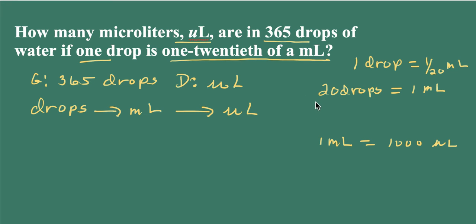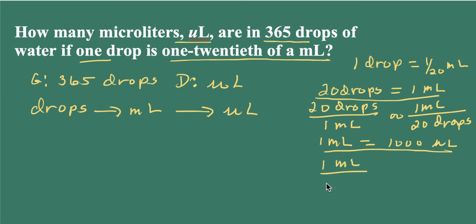Remember, with each equivalence we can write two conversion factors. So 20 drops per one milliliter, or I can write one milliliter per the 20 drops. And I'll do the same with this equivalence here. Let me underline the equivalences. So we have one milliliter per 1,000 microliters, or I can write it as 1,000 microliters per milliliter. So now I'm all set to go.